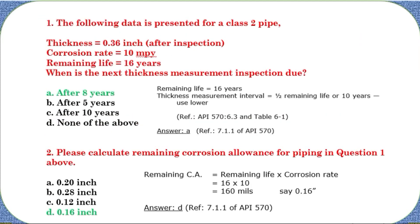Let's see question number one. The following data is presented: Class 2, thickness 2.36, corrosion rate, remaining life 20. How is it calculated? The answer is remaining life is 16 years. Take the measurement interval with half remaining life — for 10 years use the lower reference. The reference here is API 570 clause 6.1.3 and Table 6.1. This is how the answer is derived and where it comes from in API 570.